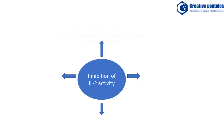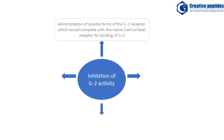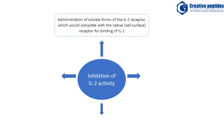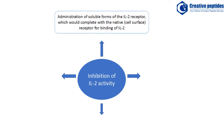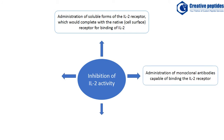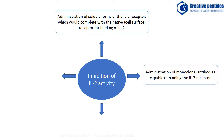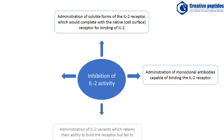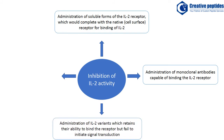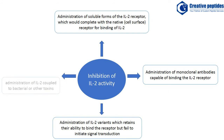These include: administration of soluble forms of the interleukin-2 receptor, which would compete with the native receptor for binding of interleukin-2; administration of monoclonal antibodies capable of binding the interleukin-2 receptor; and administration of interleukin-2 variants which retain their ability to bind the receptor but fail to initiate signal transduction.